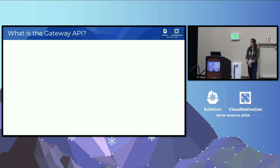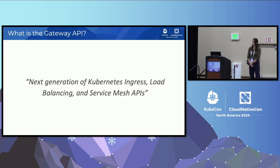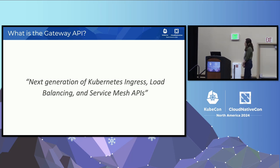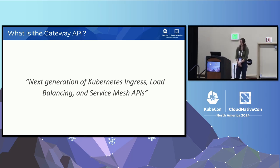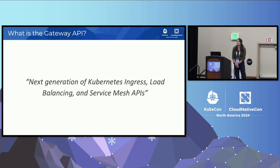What is the Gateway API? Straight from the docs, it's the next generation of Kubernetes Ingress, load balancing, and service mesh APIs. What I want to focus on today is that next generation of Kubernetes Ingress piece. So why do we need a new generation of Ingress? What problems in the Ingress API is the Gateway API trying to solve?